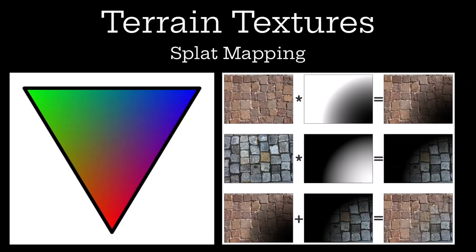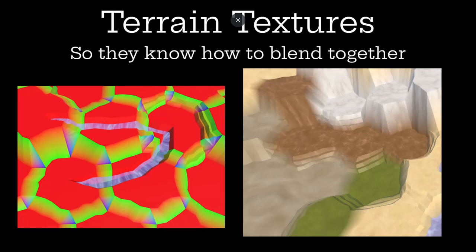Next is terrain textures. There's something really cool called splat mapping, an example of which is on the right. All it really is is taking two textures and mushing them together, and the mushing-together part is the interesting part — it's how we know what colors go where. In this triangle example, the red would be a texture, the blue would be a texture, and the green would be a texture. You can see how they blend together: in those corners you see all three colors, on the edges you see two colors, and on top you see one color. The textures are sampled based on their world position.